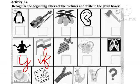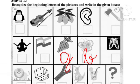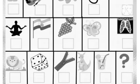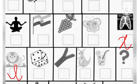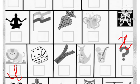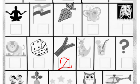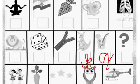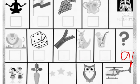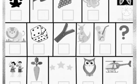Next is flag, we will write F. Next is grapes, we will write G. Next is butterfly, we will write B. X-ray, we will write X. Next is lion, we will write L. Next is dice, we will write D. Next is zip, we will write Z. Next is kangaroo, we will write K. Next is glass, we will write G. Next is question mark, we will write Q. Next is children, we will write C.